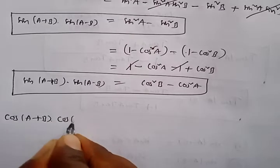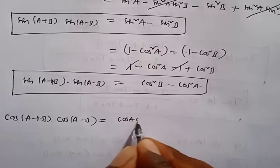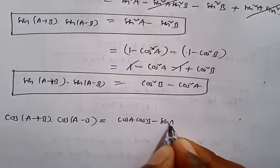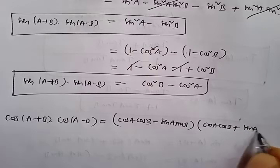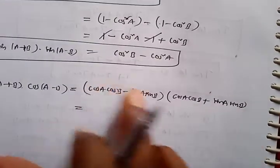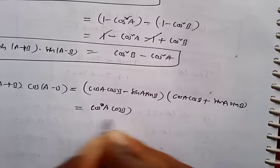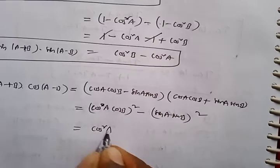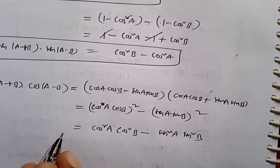Next, let us check what happens with cos(A+B)·cos(A-B). The cos(A+B) formula is cosA·cosB - sinA·sinB, and cos(A-B) = cosA·cosB + sinA·sinB. Treating this again as (a+b)(a-b) = a² - b², where a = cosA·cosB and b = sinA·sinB, we get (cosA·cosB)² - (sinA·sinB)² = cos²A·cos²B - sin²A·sin²B.